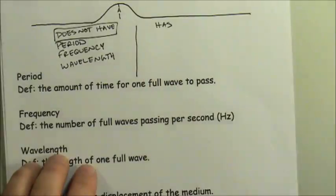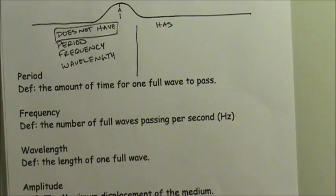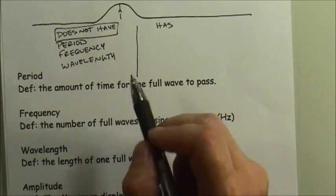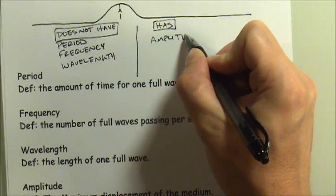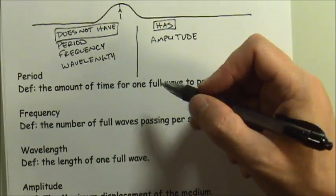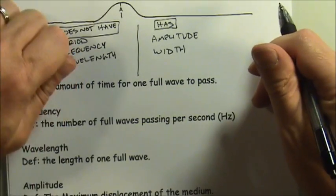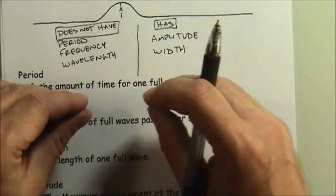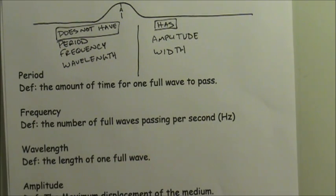Those are things a pulse does not have that all traveling waves - transverse waves, longitudinal waves - do have: period, frequency, and wavelength. What a pulse does have is amplitude, and while it doesn't have a wavelength, it does have a width. A very quick pulse gives a narrow width; moving your hand slowly gives a much broader, wider pulse.